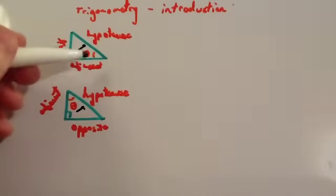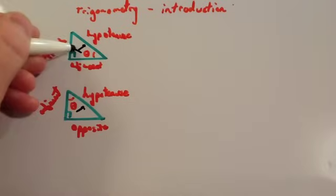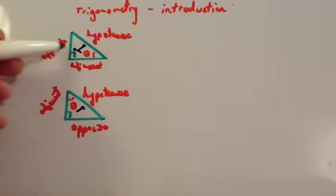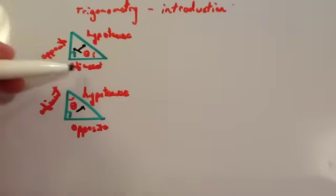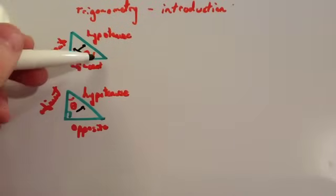Now, if the angle is here in the bottom right-hand corner, the opposite side is called the opposite. The one opposite the angle is called the opposite and the one left is called the adjacent. It's called adjacent because it will be beside the angle.